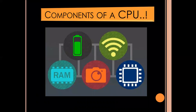Now as you can all see in this PPT, there are a few pictures which represent components of a CPU, which consists of RAM, cameras, Wi-Fi, battery, and other components.